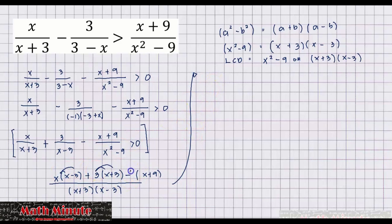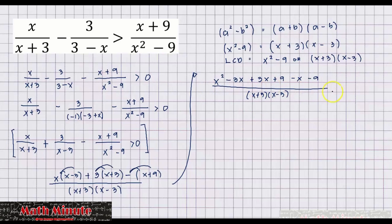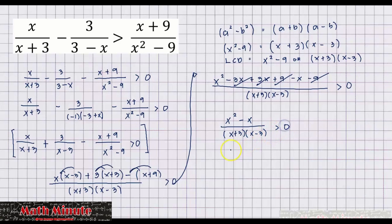We distribute each numerator: x times x minus 3 gives x squared minus 3x; 3 times x plus 3 gives 3x plus 9; minus x plus 9 stays as is. So the combined numerator is x squared minus 3x plus 3x plus 9 minus x minus 9 all over x plus 3 times x minus 3, greater than 0. Combining similar terms: negative 3x plus 3x cancels, positive 9 minus 9 cancels, leaving x squared minus x all over x plus 3 times x minus 3, greater than 0.